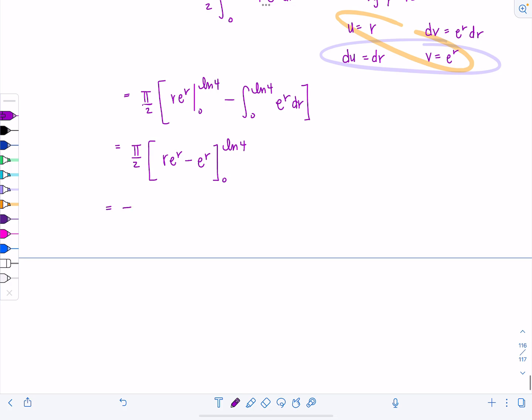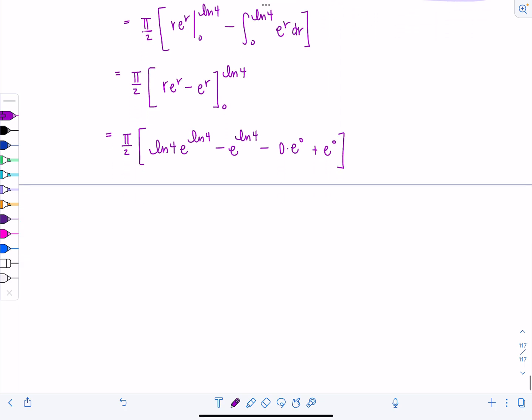And then here pi over 2, substitute in. Now we have ln of 4 e to the ln of 4 minus e to the ln of 4 minus 0 times e to the 0 plus e to the 0. So what do we got? Let's see, pi over 2 times this is just ln of 4 times 4 minus this is 4 minus 0 plus 1.